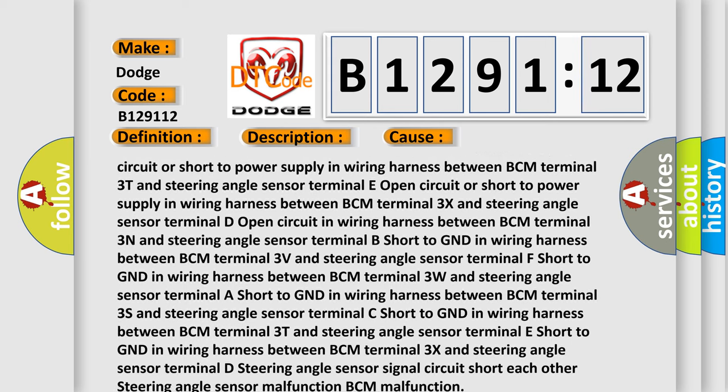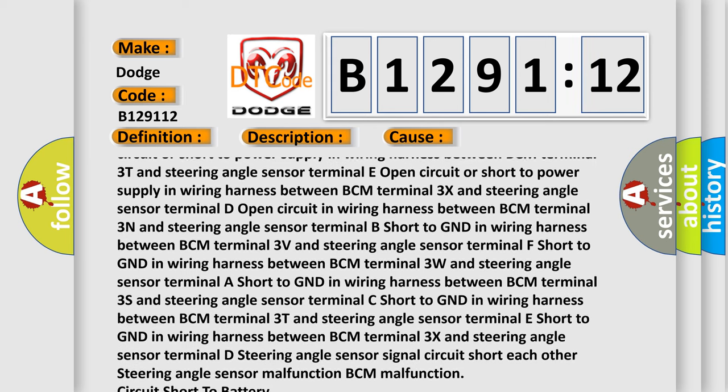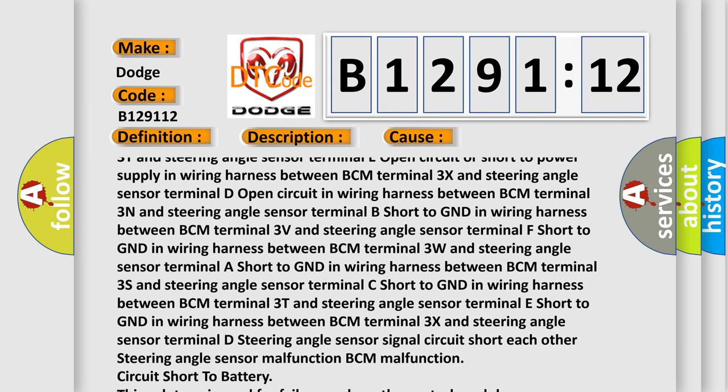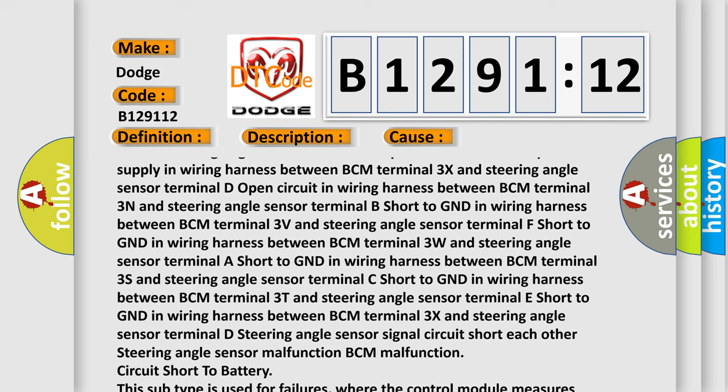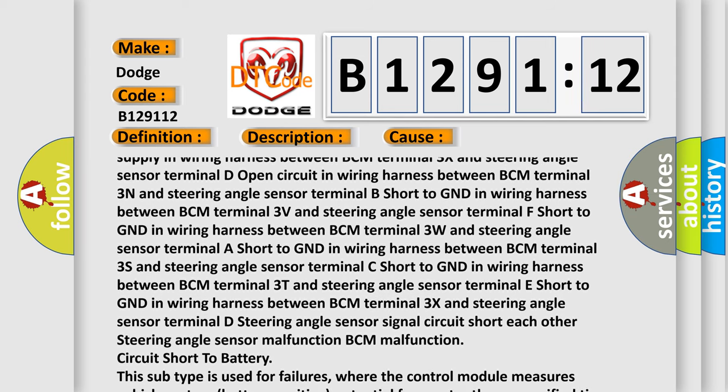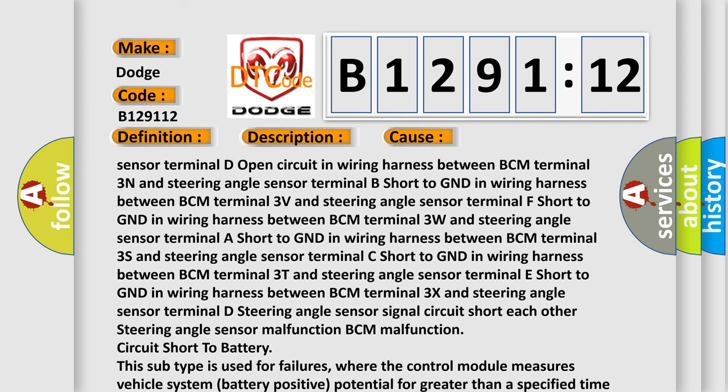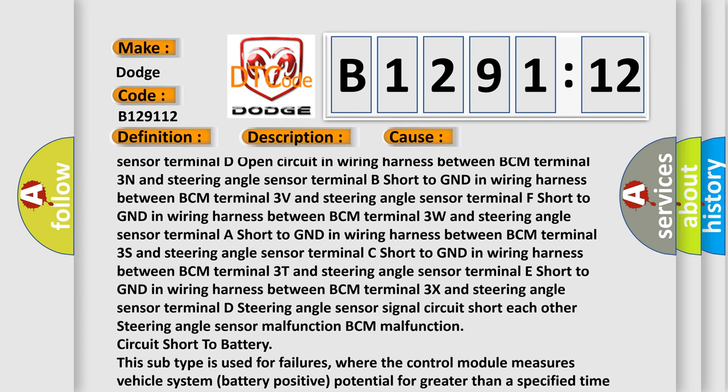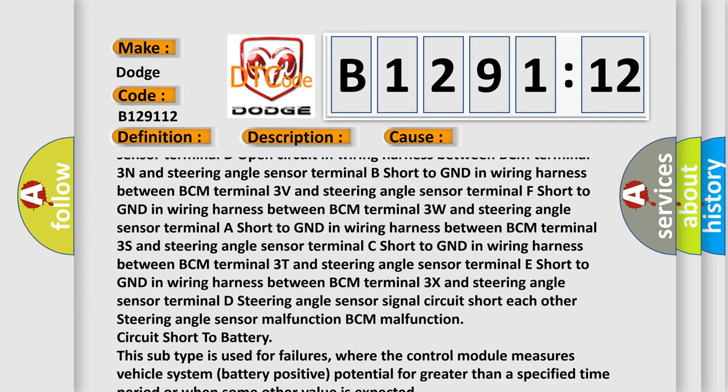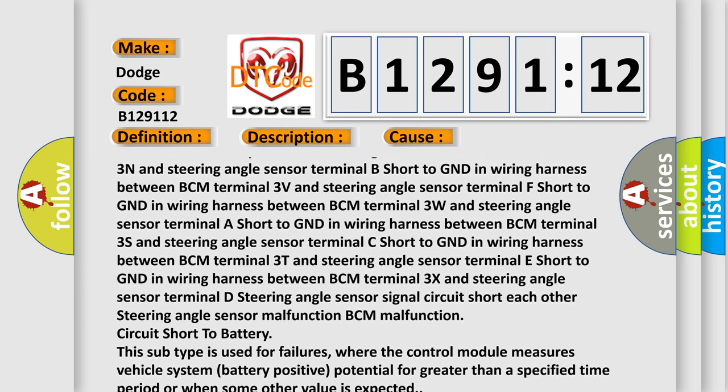Short to GND in wiring harness between BCM Terminal 3V and steering angle sensor terminal F. Short to GND in wiring harness between BCM Terminal 3W and steering angle sensor terminal A. Short to GND in wiring harness between BCM Terminal 3S and steering angle sensor terminal C. Short to GND in wiring harness between BCM Terminal 3T and steering angle sensor terminal E.